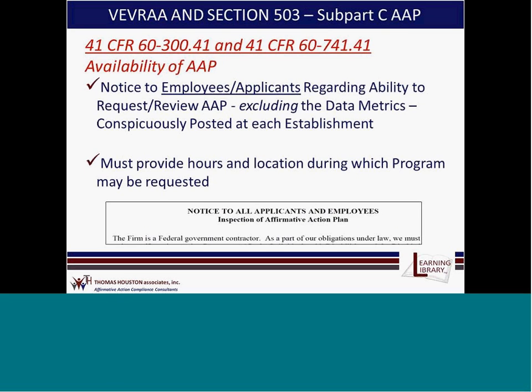Under Section 503, the regulations clearly indicate that contractors must provide a notice to employees and applicants regarding the ability to request and review the affirmative action plan, excluding data metrics. This notice must be conspicuously posted at each establishment, and it applies to both employees and applicants — so it's not sufficient to post only in an employee break room. Notices must also be posted where applicants can see them, such as at the entrance of your facility. The notice must provide the hours and location during which the program may be requested for review, and this pertains to the veterans and individuals with disabilities affirmative action plan, not the minority-female affirmative action plan.